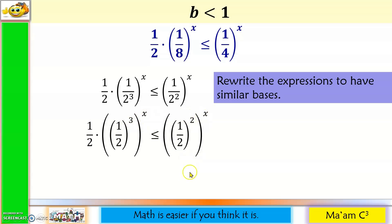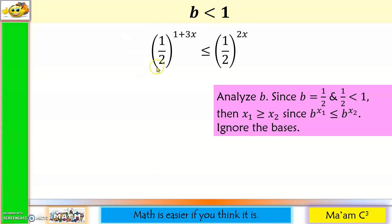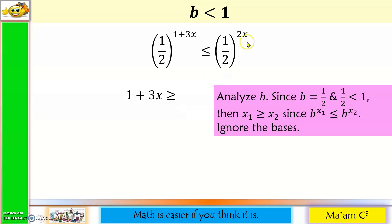3 times x is 3x, and 2 times x is 2x. Remember the rules of exponents — whenever you have the same base, copy the base and add the exponents. The invisible exponent here is 1, so 1 plus 3x. Let us analyze our base: it is 1 half, and 1 half is less than 1. So x sub 1 will be greater than or equal to x sub 2, because b raised to x sub 1 is less than or equal to b raised to x sub 2. Since our base is less than 1, our inequality symbol will reverse — from less than or equal to, it becomes greater than or equal to — and then copy 2x.